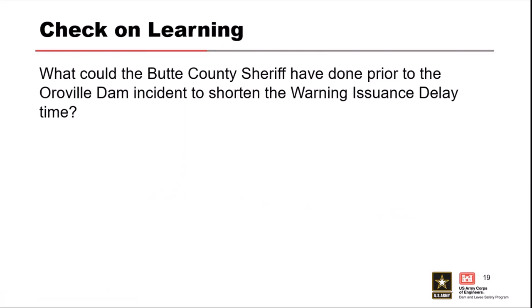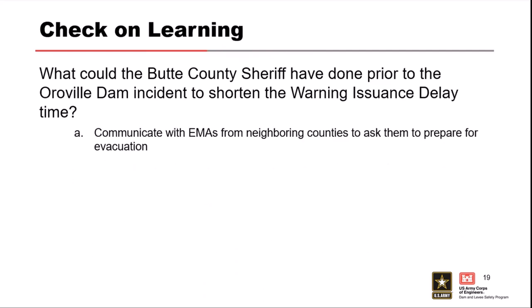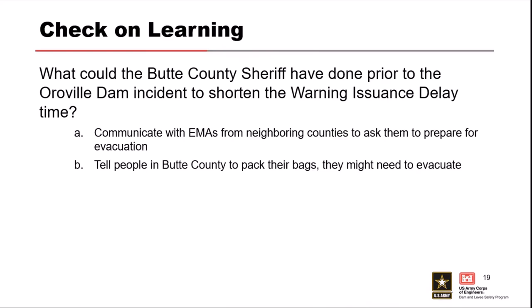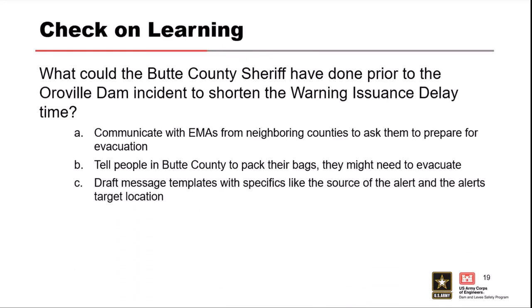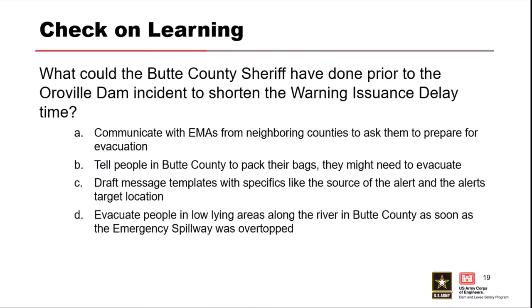Check on learning: what could the Butte County Sheriff have done prior to the Oroville Dam incident to shorten the warning issuance delay time? Options: communicate with EMAs from neighboring counties to prepare for evacuation; tell people to pack their bags; draft message templates with specifics like the source and target location; or evacuate people in low-lying areas as soon as the emergency spillway overtopped. The answer is C — drafting message templates — though there's value in all of them, particularly drafting emergency templates ahead of time and moving people near the river early.